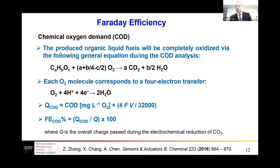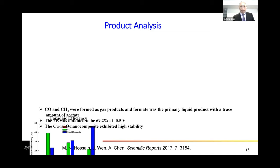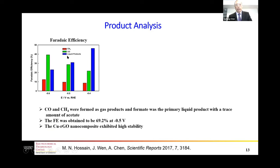The approach is that any produced organic liquid products can be oxidized to produce the reverse reaction back to CO2. We can then use the number of electrons transferred for the oxygen to calculate how many electrons were used for the electrochemical reduction to produce the liquid products. Based on this approach, we can determine the faradaic efficiency.